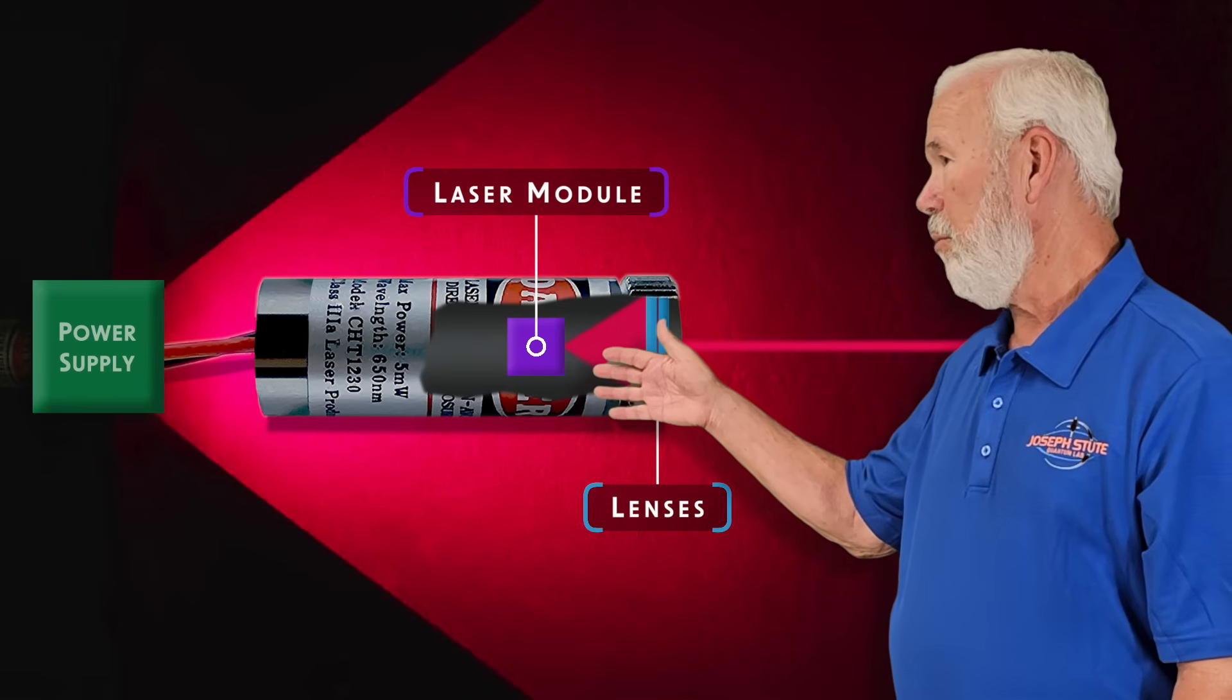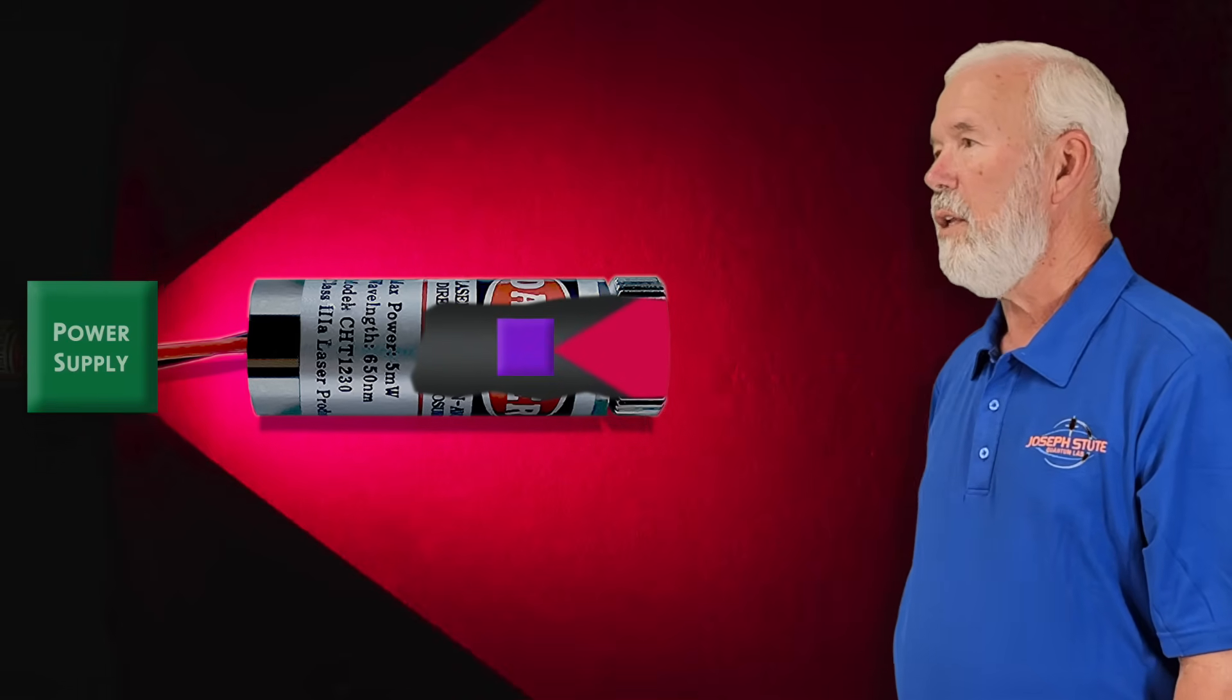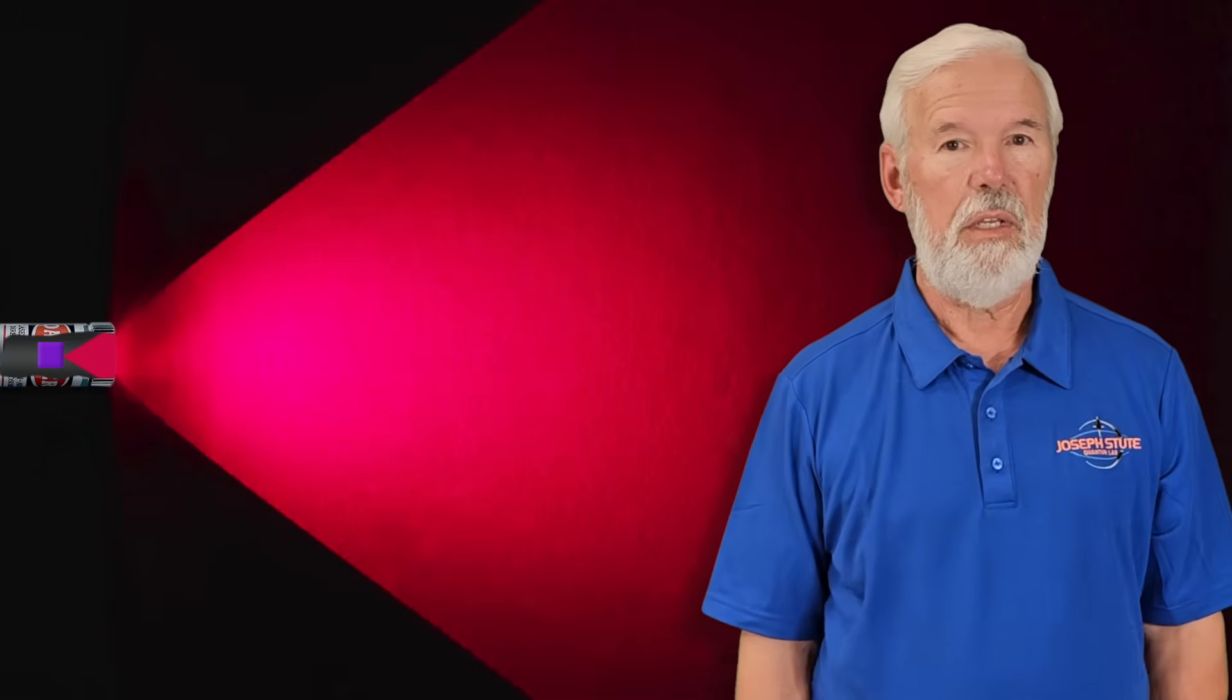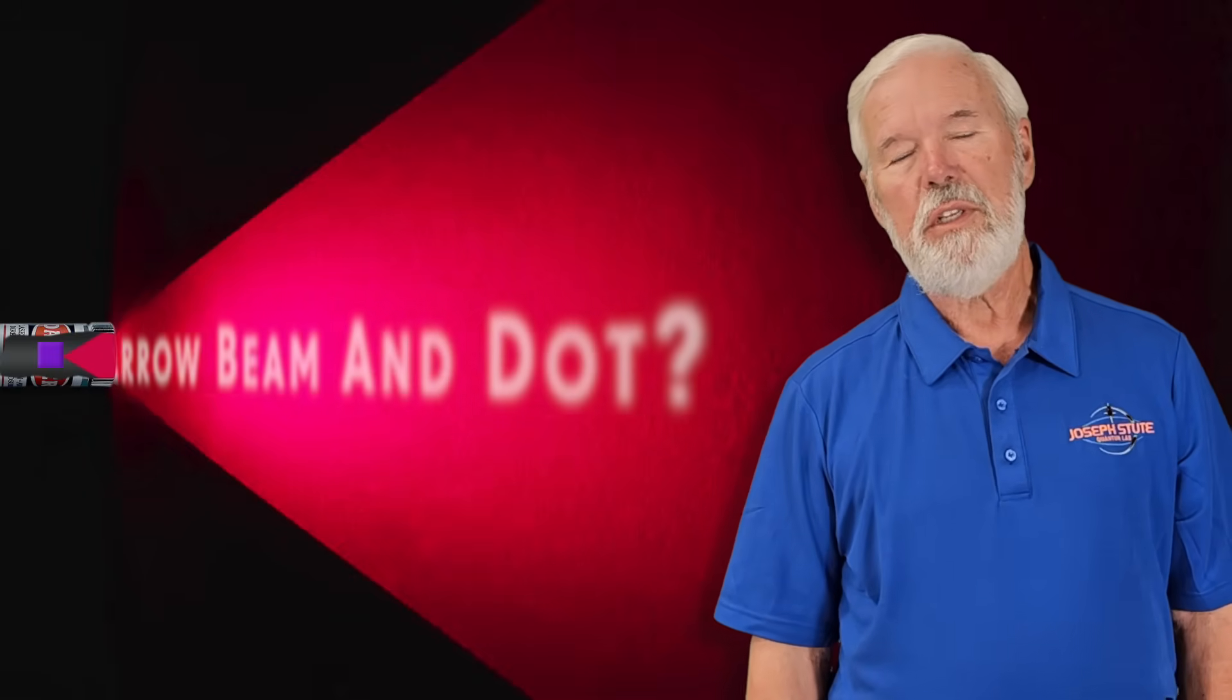This is what a laser beam looks like when the focusing lenses have been removed. Not what I expected. Where is the narrow beam and small dot?